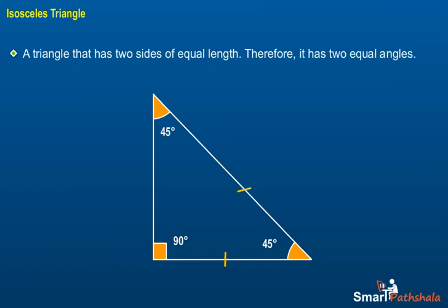Isosceles Triangle. A triangle that has two sides of equal length. Therefore, it has two equal angles.